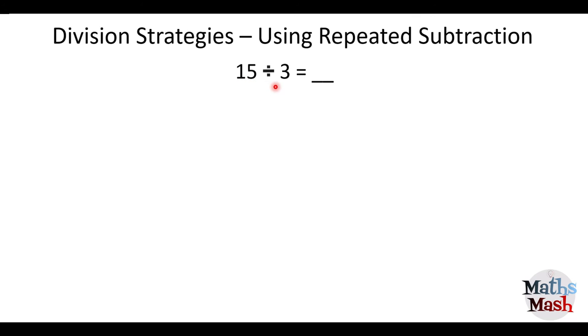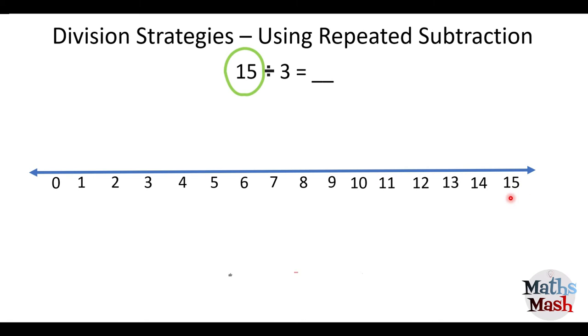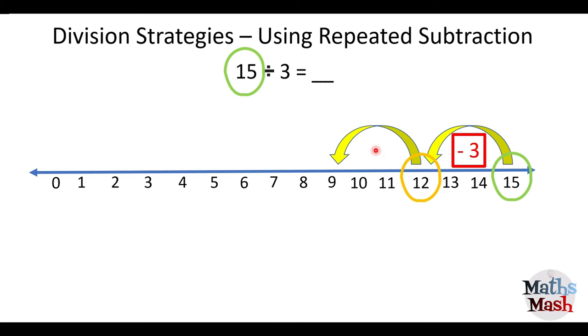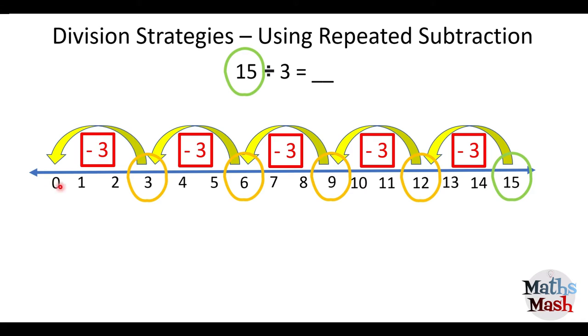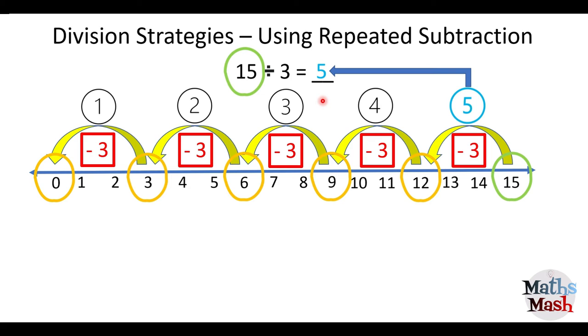Okay, so we have our question here, 15 in groups of three. We've got our number line, and I'm going to start at 15 here. And I'm going to go back in groups of three. So I'm counting back or subtracting in groups of three along here until I get to zero. We always have to end up at zero. So you can see that I've got five hops here. So that means that 15 divided by three is five. And you can check your work by multiplying three times five. That should give you 15.